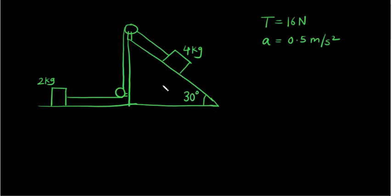In this question, the two blocks have the acceleration of 0.5 meter per second squared and the tension between the string is 16 newton. The question is we have to find out the coefficient of frictions mu1 and mu2. Okay, so let's do that.